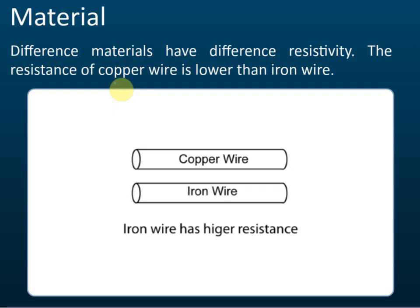If asked to compare the resistivities of copper and iron, you should know that the resistivity of copper is lower. For example, if we have two resistors of the same length, same cross-sectional area, and same temperature, the copper wire will have lower resistance compared to the iron wire. That is why in cables and wires in your house, the material used is copper — because copper has low resistivity.